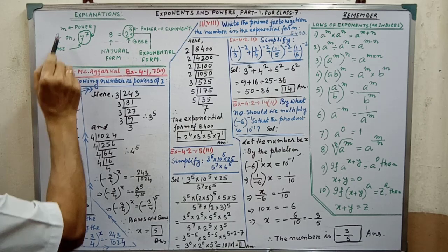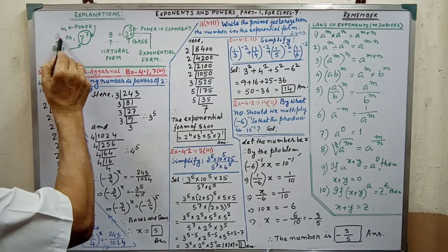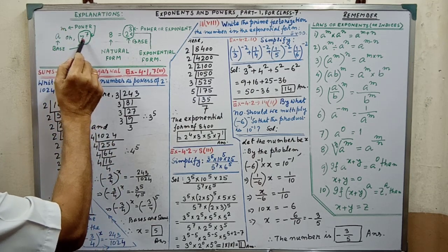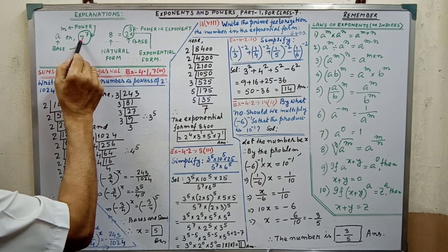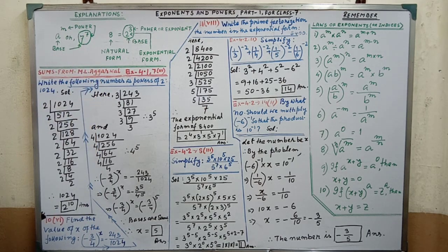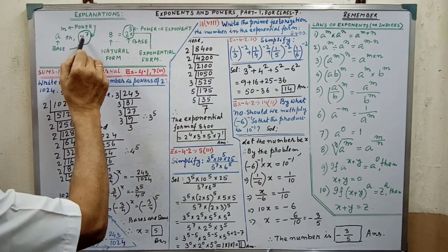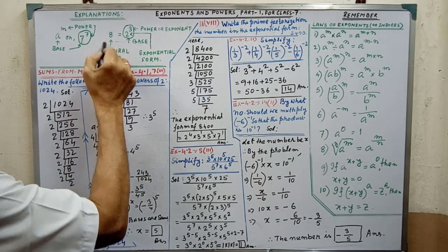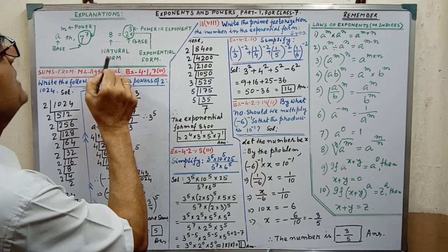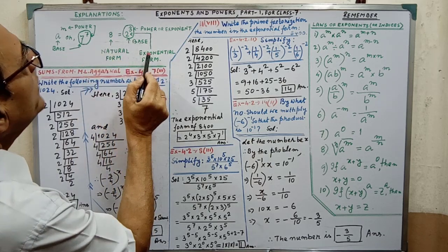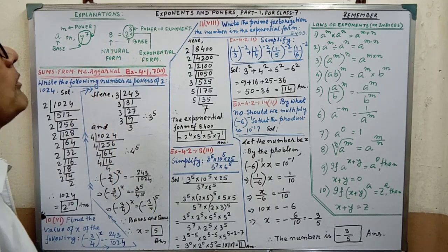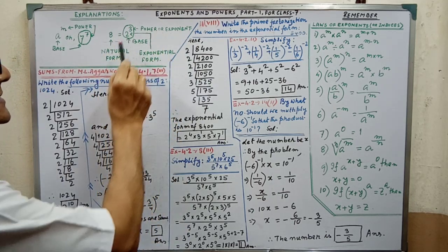A is the base and M is the power. A is any numerical number, M is also any numerical number. This is why we may write 7 to the power 7 — 7 is the base and 7 is the power, since you are students of class 7. Or suppose the natural number 8; if you convert it into exponential form, that is 2 cubed — 2 is the base and 3 is the power or exponent. This you have to remember.